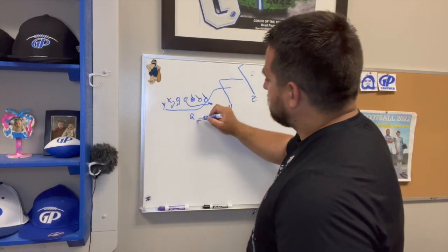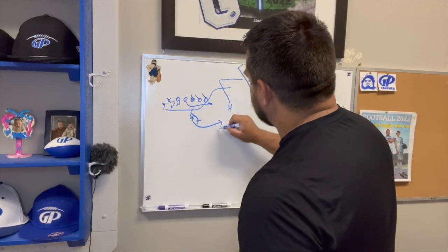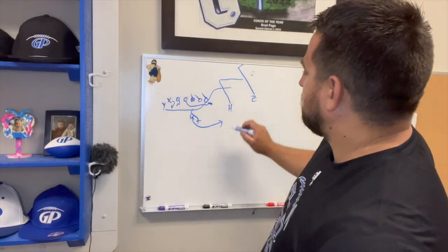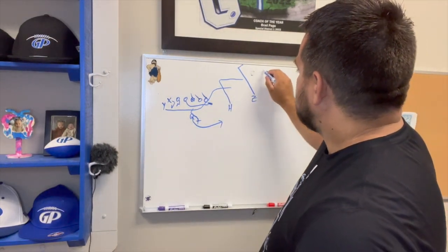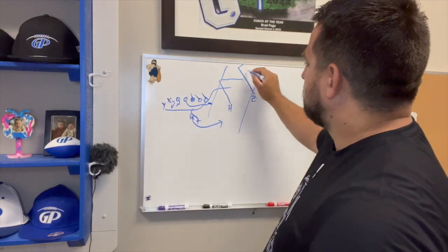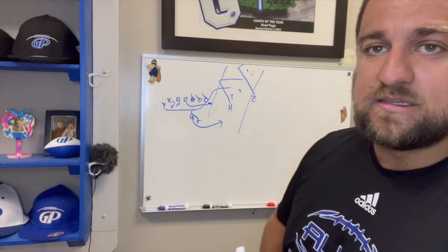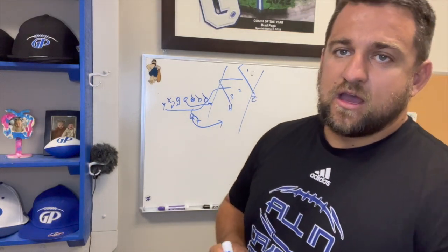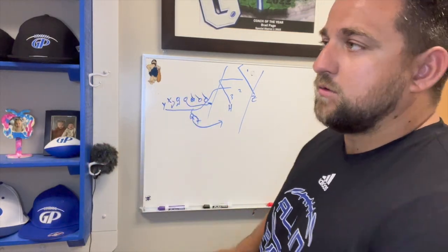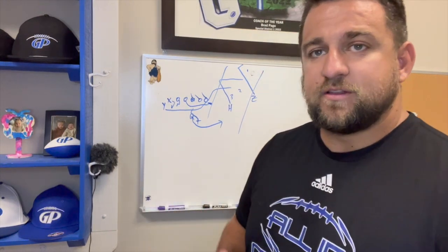This guy is going to come and act like he's wrapping and then leak out. The H is inside then out, and the Z — I don't have enough board space — is doing a crack corner and going deep. We sell like we're running the counter and then boot out of it. That gives us a nice flood concept, and when we run it right the quarterback has a great view of all three routes — one, two, three — and can easily see which one is open while he's booting.